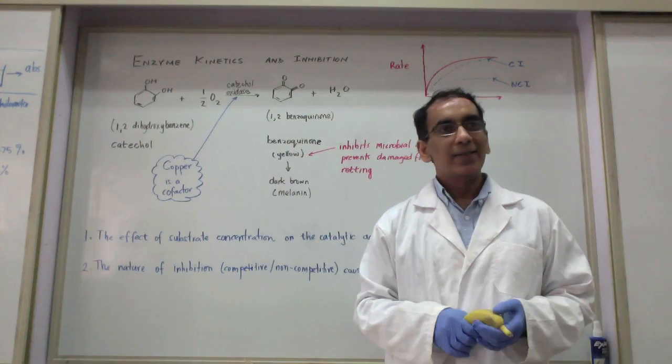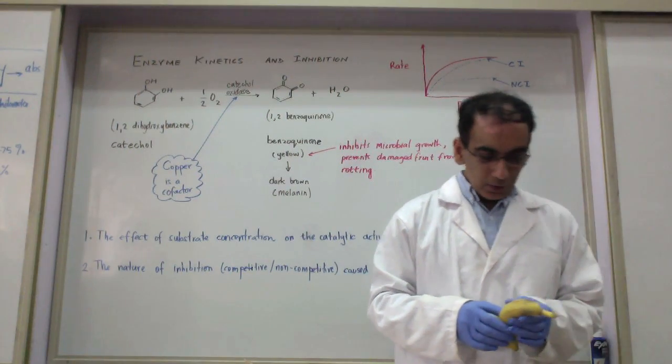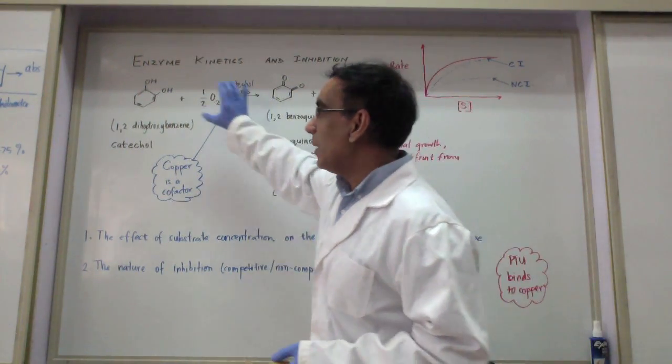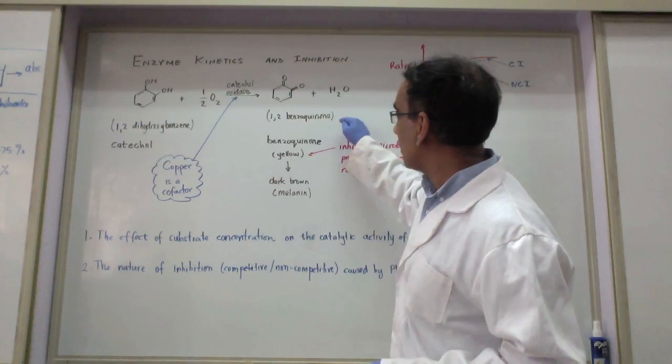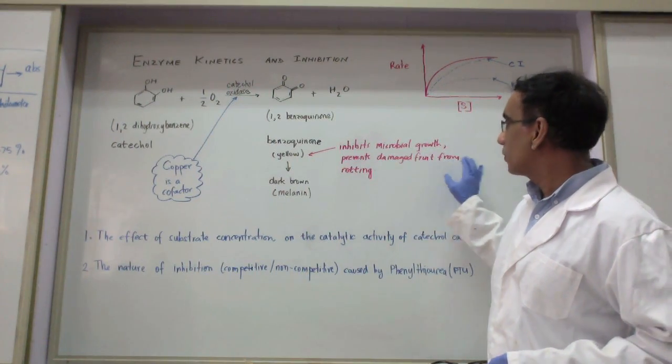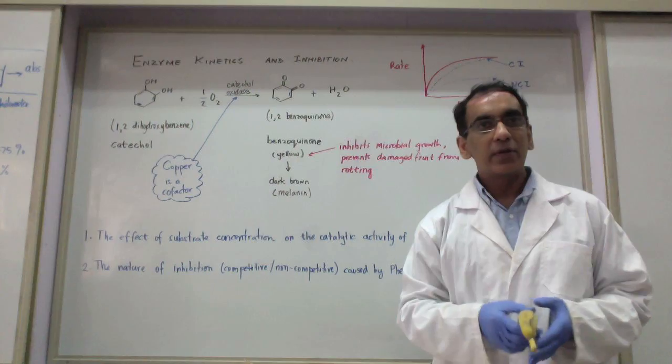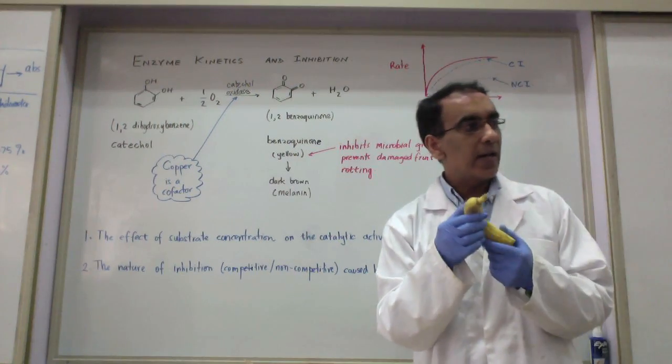But the question is, what is a cofactor? It helps the enzyme to work, right. So there's a purpose behind this, but then what's the point of it forming this thing called benzoquinone? Well, benzoquinone inhibits microbial growth and prevents damaged fruit from rotting. So the fruit can get damaged, but this is just like a way of getting some kind of antiseptic.